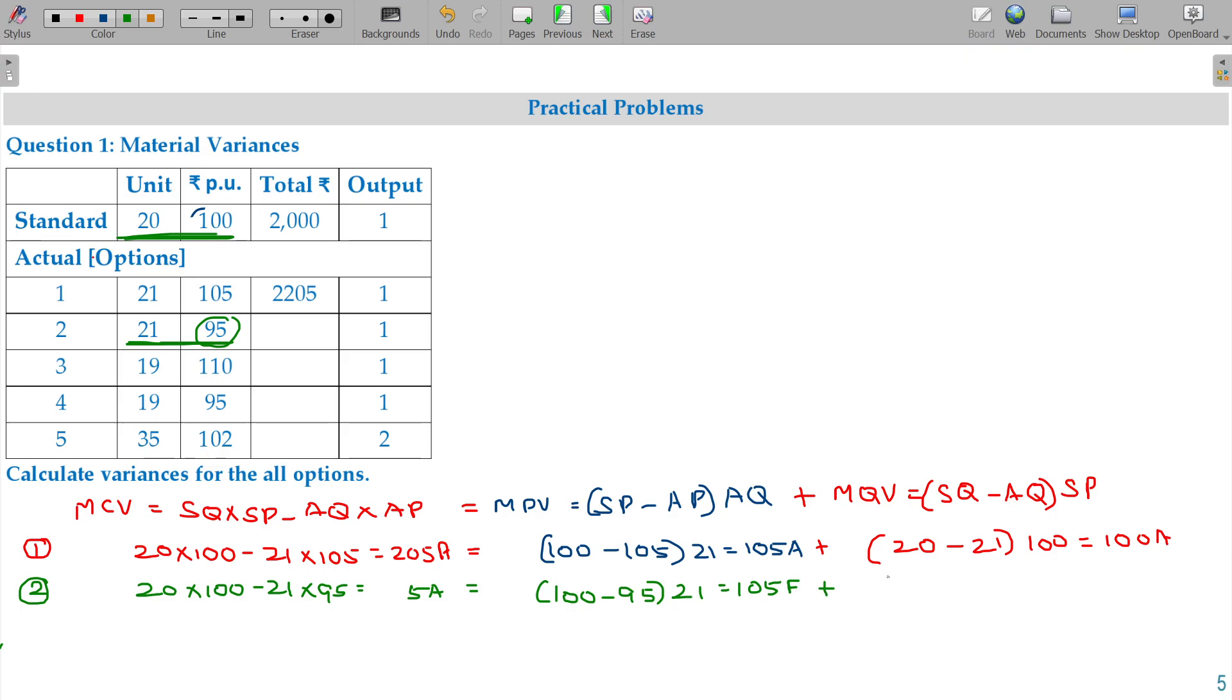And in case of quantity, I consumed one unit extra. 20 minus 21, adverse by 1. Standard price being 100, so 100 adverse. 100 rupees adverse and 105 favorable ends with 5 favorable in net.